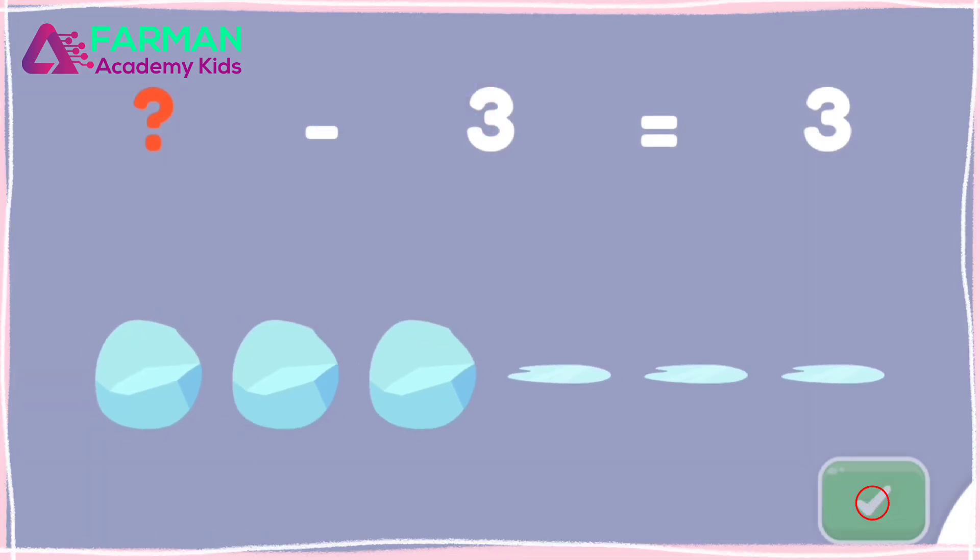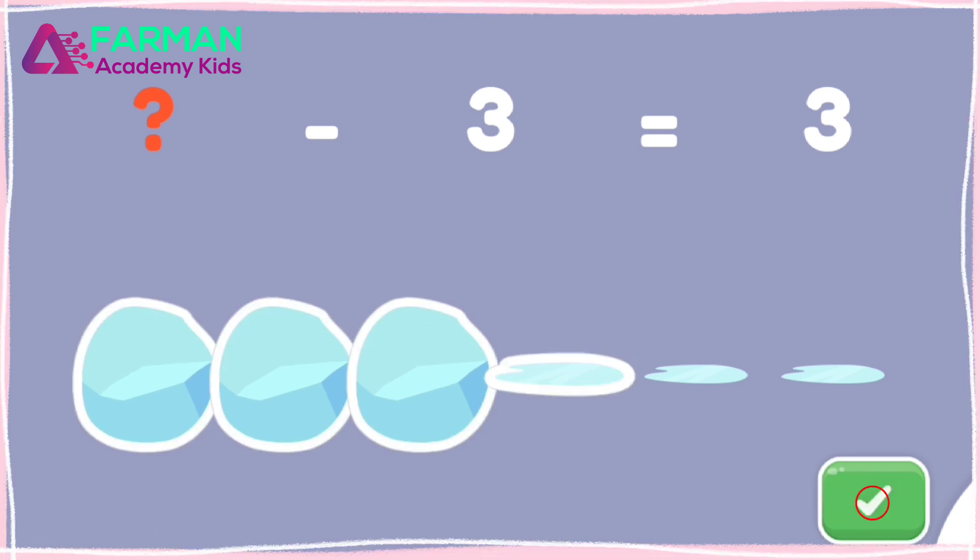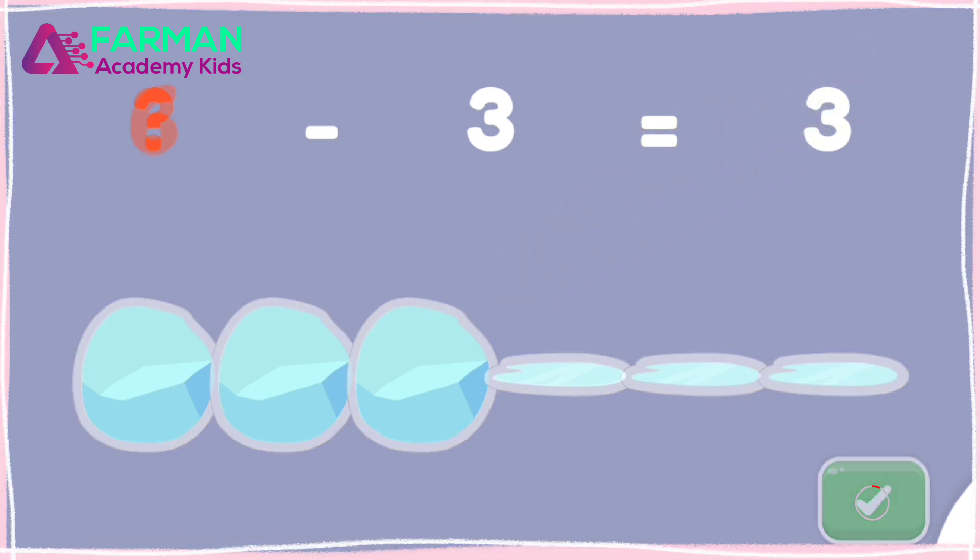What minus 3 equals 3? Tap all the snowballs and puddles to count. 6 minus 3 equals 3.